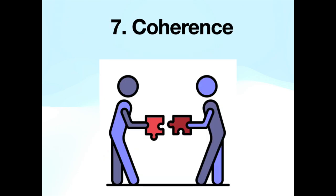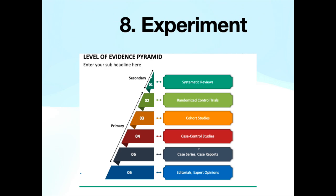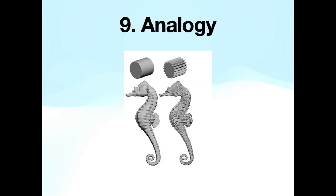The proposed causal relationship is coherent or consistent with other known facts and does not conflict with established principles. Experimental evidence, such as randomized controlled trials, can provide stronger support for causation than observational studies alone.